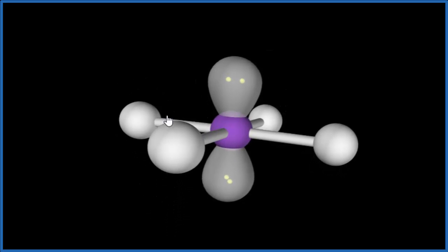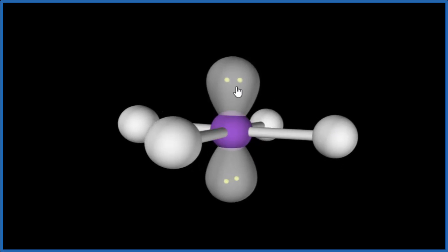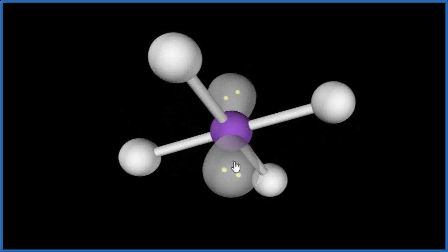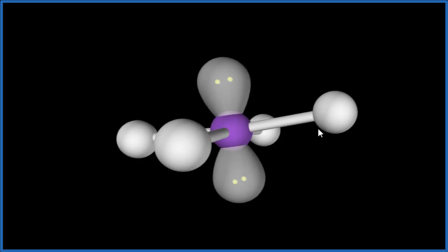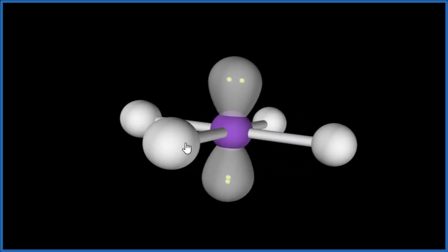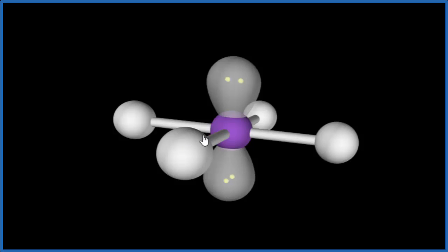You can see that these chlorine atoms, they're all in a plane. The lone pairs are in the top and the bottom. This is a symmetrical molecule, so all of the dipoles are going to cancel out.